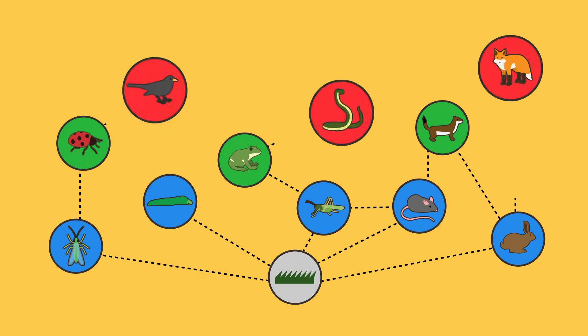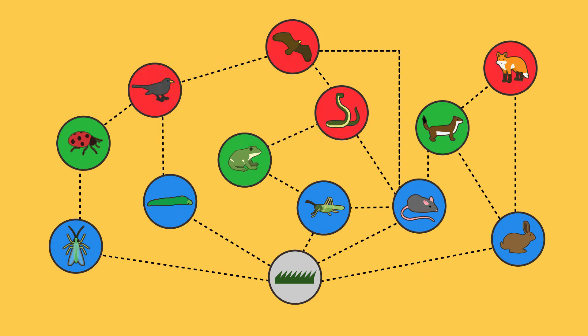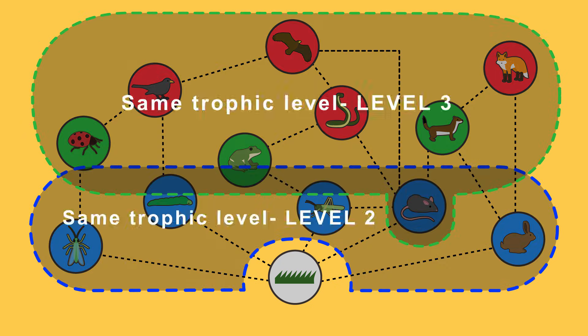A food web shows all of the interconnected food chains in an ecosystem and are much more complex. In every food chain there are trophic levels. All organisms in a particular trophic level transfer the same amount of energy away from the producers or base of the food chain.